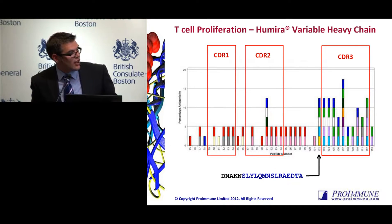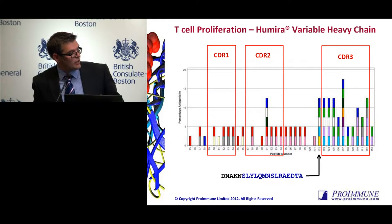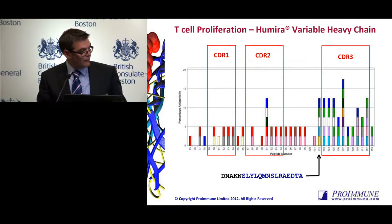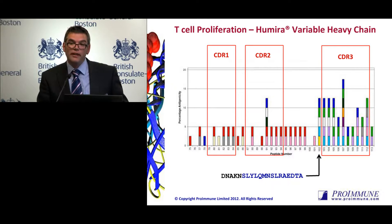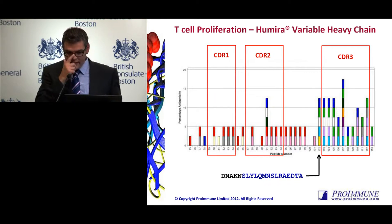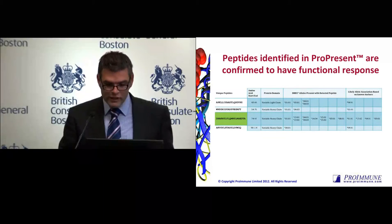I want to highlight this particular sequence here, which is on the beginning of CDR3. This sequence was also the sequence identified through the mass spec technology — the ProPresent. That was the 15-mer shown in blue. With the full-length sequence identified through mass spec, we have this DNAK sequence on the N-terminus as well. So this is actually the full-length sequence which we know is causing this functional response in vitro.